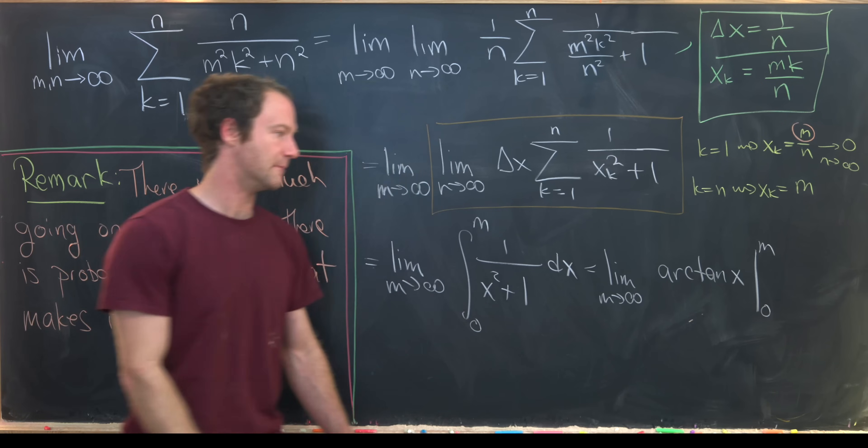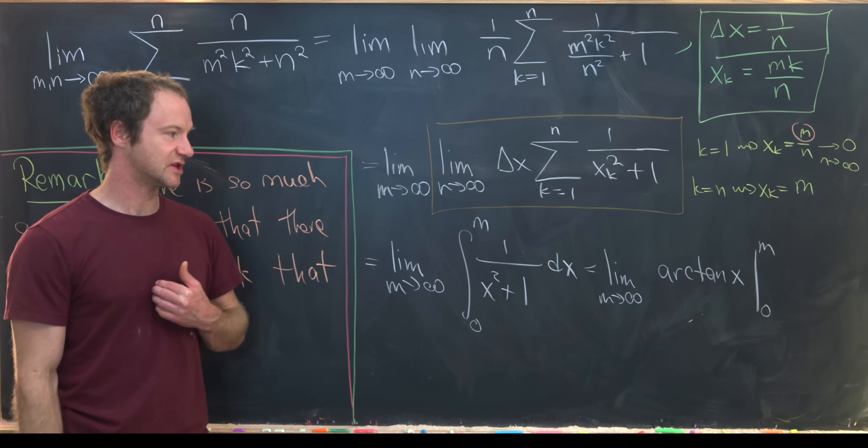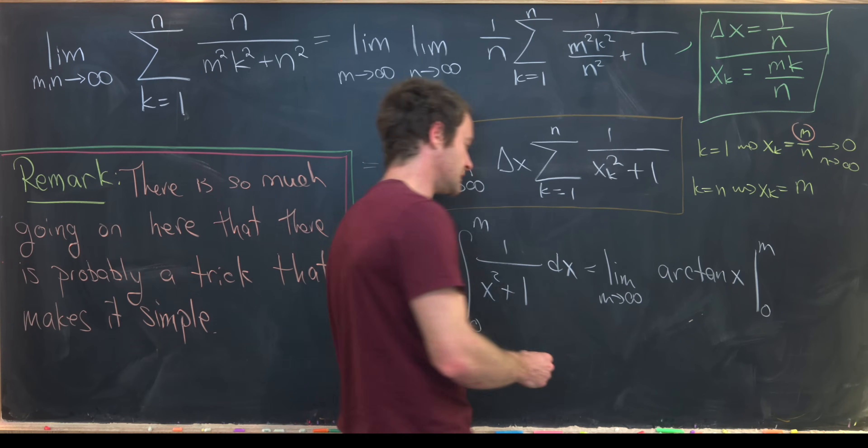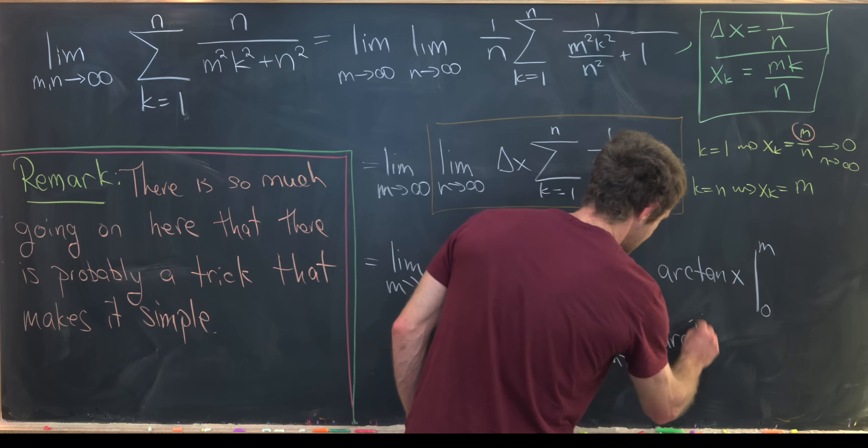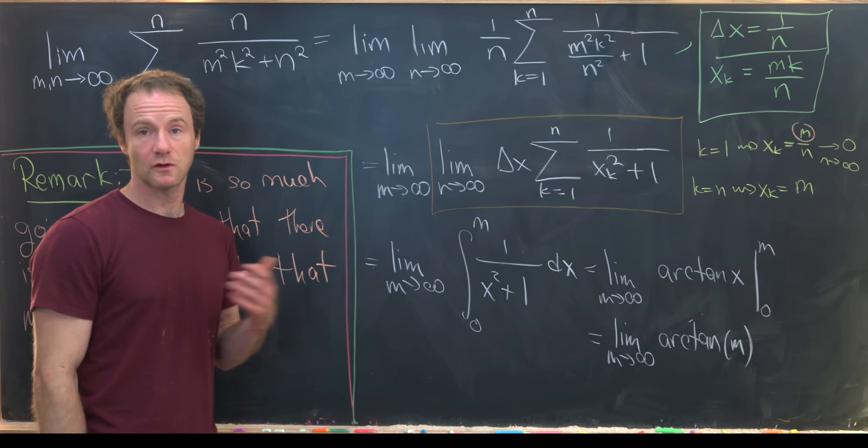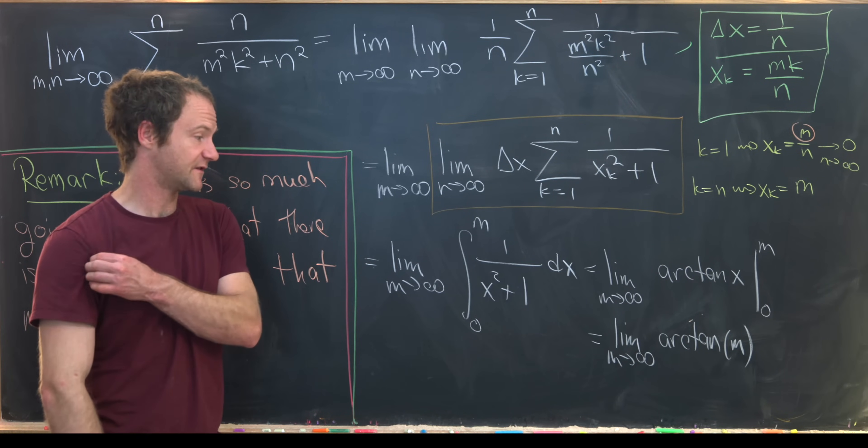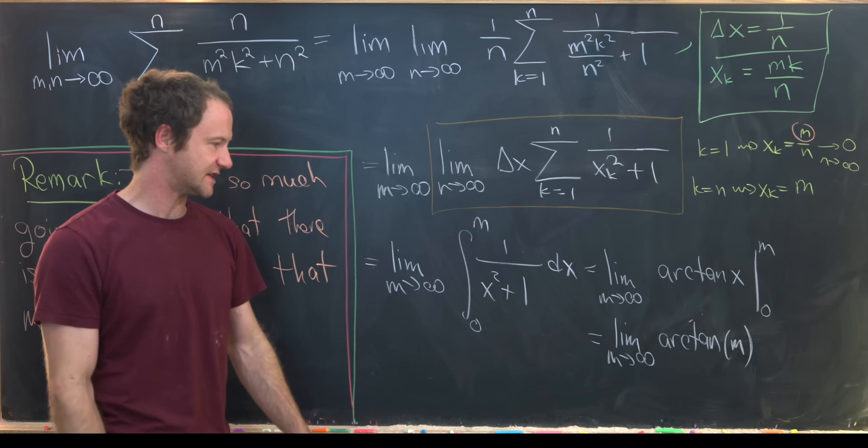This is going to give us the limit as m approaches infinity of the inverse tangent of x evaluated at 0 and m. It's well known that the inverse tangent of 0 is equal to 0, so that just leaves us with the limit as m goes to infinity of the inverse tangent of m.